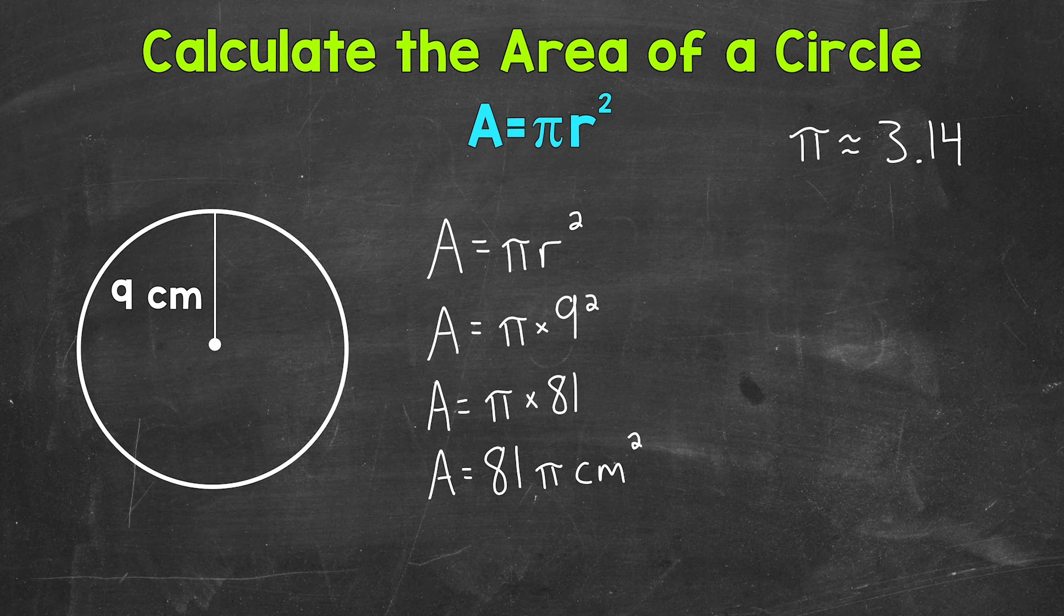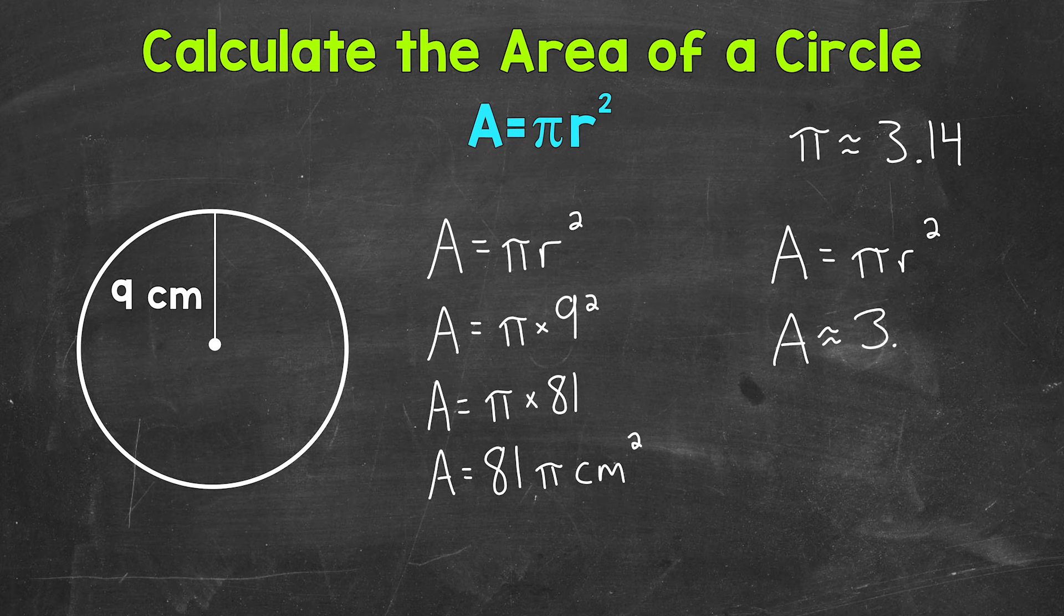So let's go through our process here. We're going to start by writing out our formula. So area equals pi r squared. Next, let's plug everything in. So we have area is approximately, and I'm using the approximately symbol since we are using an approximate version of pi. So 3.14 that we're using for pi times our radius of 9 centimeters squared.